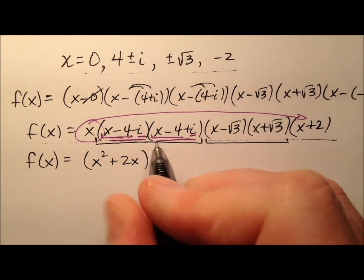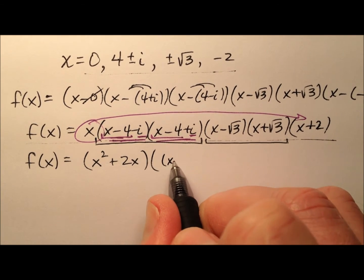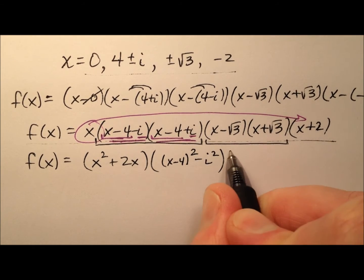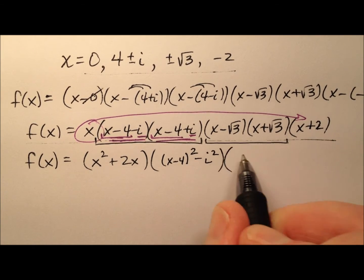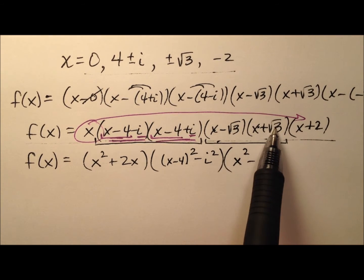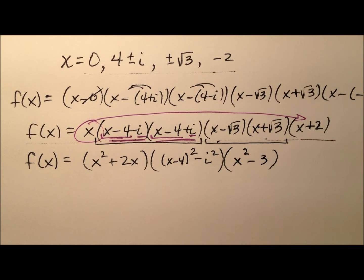I have x minus 4 and then a minus i and a plus i. So what I can do is say that I have an x minus 4 squared minus an i squared. And finally I have another difference of squares. So x times x is x squared minus square root of 3 times square root of 3 is 3.